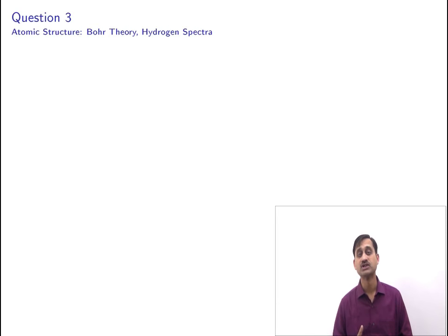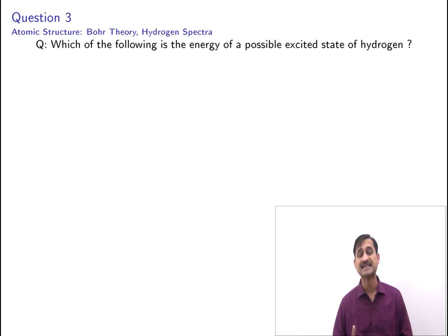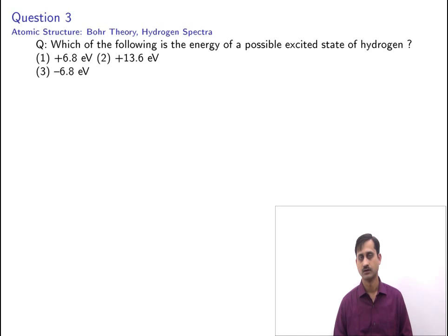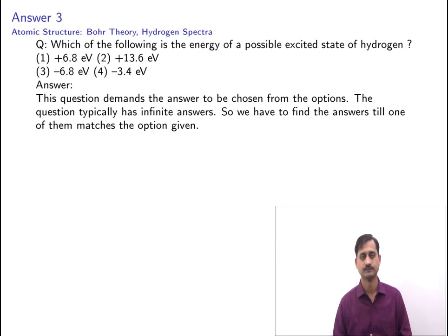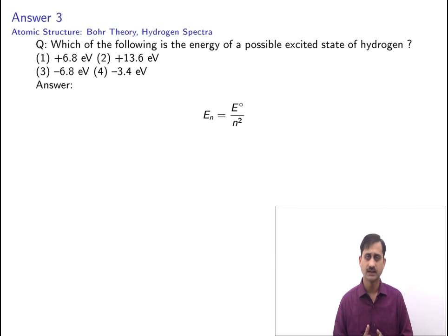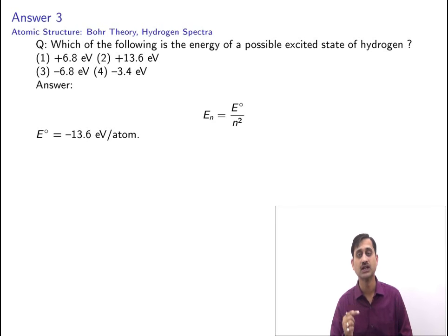The next question is from atomic structure, subtopic Bohr theory and hydrogen spectra. The question asks: which of the following is the energy of a possible excited state of hydrogen? Options are +6.8 eV, +13.6 eV, −6.8 eV, or −3.4 eV. The energy of the electron in any shell of hydrogen is En = E₀/n², where E₀ = −13.6 eV. The question has infinite possible answers, so we check until one matches.